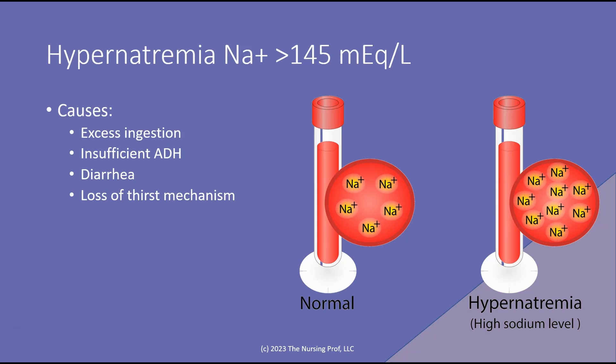Hypernatremia is a sodium level higher than 145 milliequivalents per liter. Causes include too much ingestion, insufficient ADH (antidiuretic hormone) — especially in patients with head injuries — diarrhea, and loss of the thirst mechanism from cerebral issues such as stroke or head trauma. Looking at the pictures, in hypernatremia we have a lot more sodium ions. Water moves to where the sodium is, and that's what causes our symptoms: swelling of the cells and potentially cerebral edema.